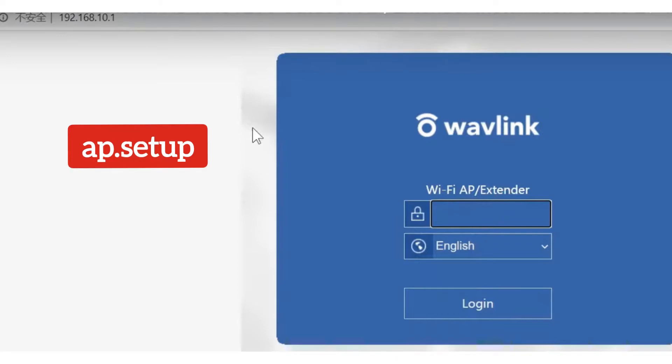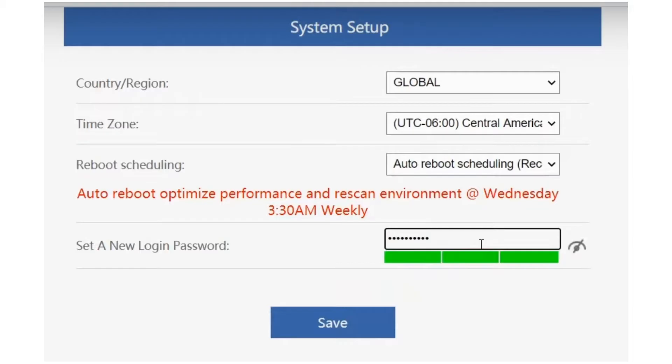On the login window, type username as admin and hit enter. Select region as Global followed by your time zone. For reboot scheduling, select auto reboot and create a new login password.